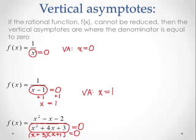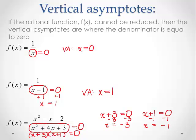Setting (x plus 3)(x plus 1) equal to zero gives us two smaller equations to solve. The first equation, x plus 3 equals zero, gives x equals negative 3 by subtracting 3 from both sides. The second equation, x plus 1 equals zero, gives x equals negative 1. So we get two vertical asymptotes: one at x equals negative 3, and another at x equals negative 1.